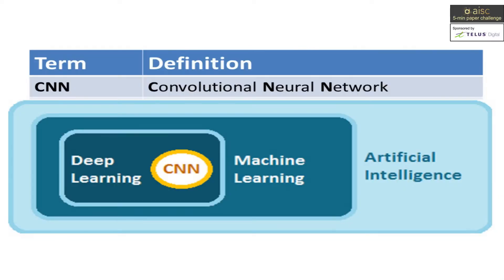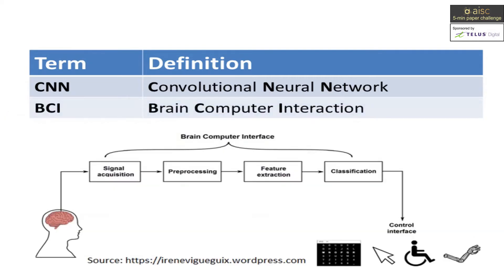CNN, or convolutional neural networks, extract unique features across multiple layers of convolutional transformation to learn how to differentiate between data classes. BCI stands for brain-computer interaction, and signal processing is one of the primary components in BCI.